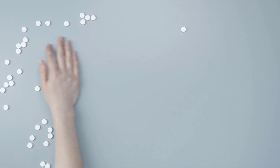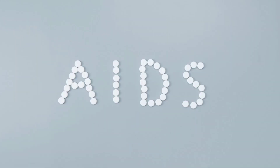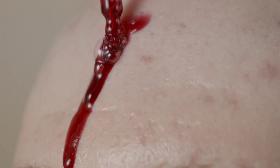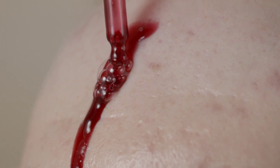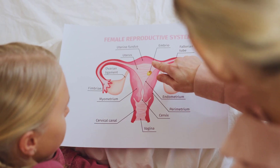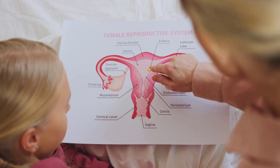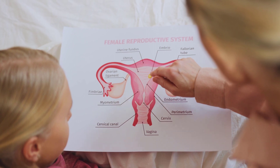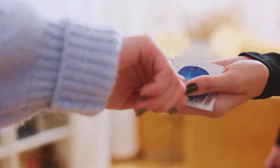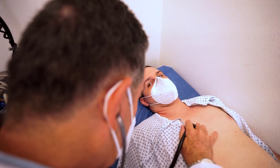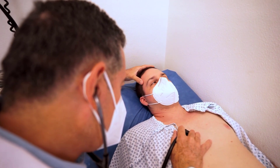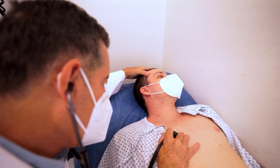HIV-AIDS. HIV is a virus that attacks the immune system, eventually leading to AIDS. The virus is transmitted through blood, semen, vaginal fluid, and breast milk. HIV-AIDS has caused an estimated 36 million deaths since it was first identified in the 1980s. Antiretroviral therapy can help manage the virus and prevent the development of AIDS, but there is currently no cure.